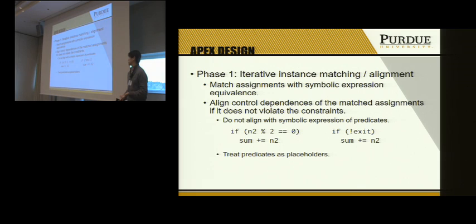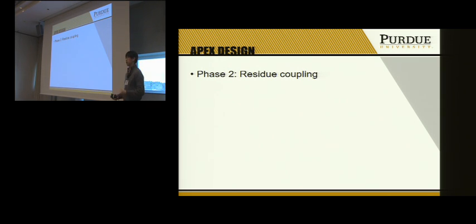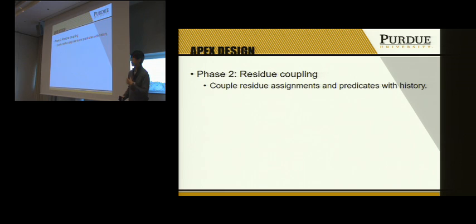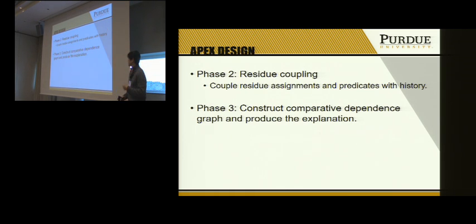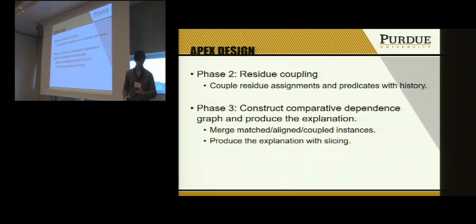We treat predicates as placeholders and try to align these placeholders. In the next step, we try to couple the residue traces: during the first step there are still some instances that should be aligned but could not be due to bugs in the implementation. In the second step we couple these residues by looking at the history generated in the first step. At the final stage we construct a comparative dependence graph by merging matched, aligned, and coupled instances, and produce an explanation by slicing on the dependence graph.